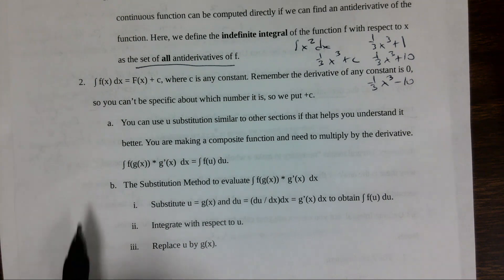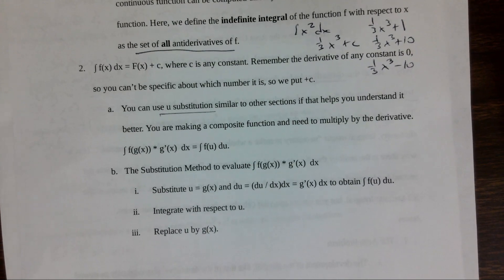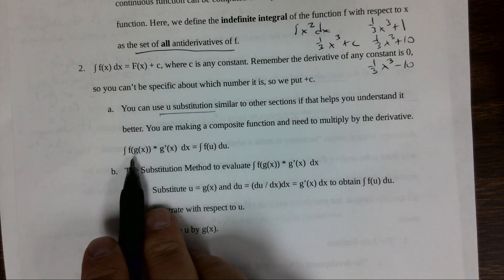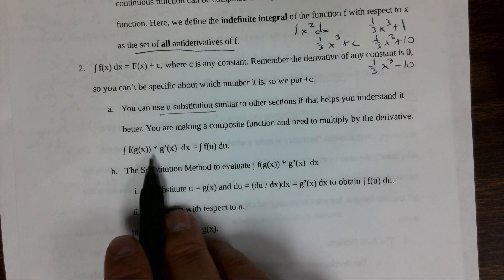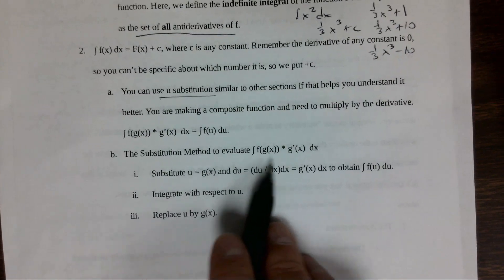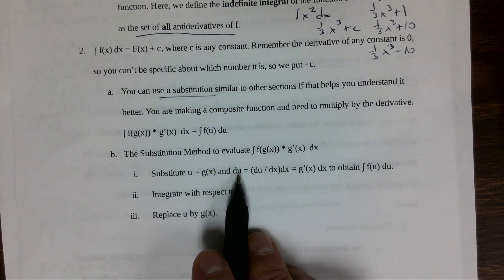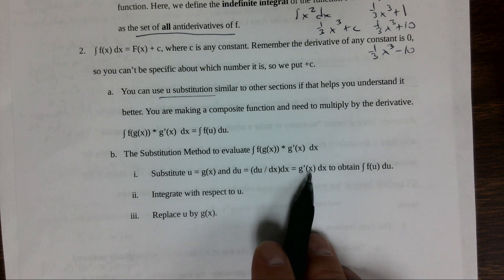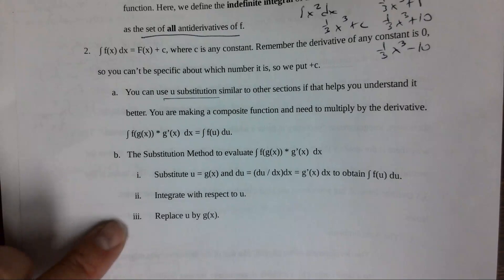You can use u-substitution, similar to other sections. You're making a composite function and need to multiply by the derivative. If you have the integral of f(g(x)) times g′(x), that can be expressed as the integral of f(u) du. The substitution method: let u = g(x), then du/dx = g′(x) dx = g′. Then you integrate and replace.